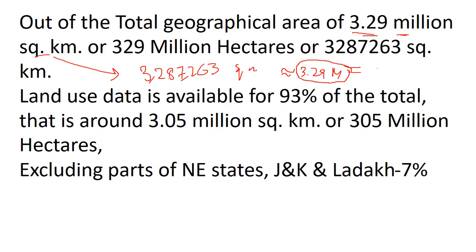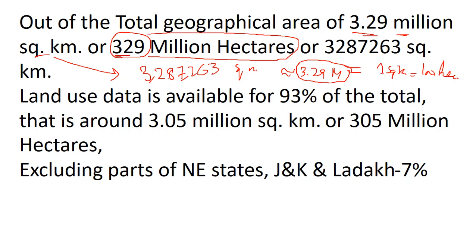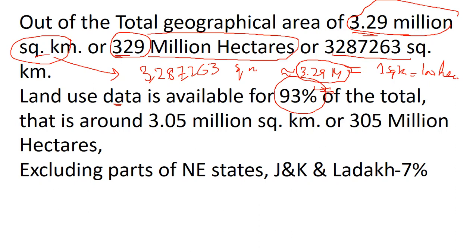India has a land area of 329 million hectares, which is equal to 3.29 million square kilometers. However, land use data is available only for 93% of the total land area of India, meaning 7% is left out.